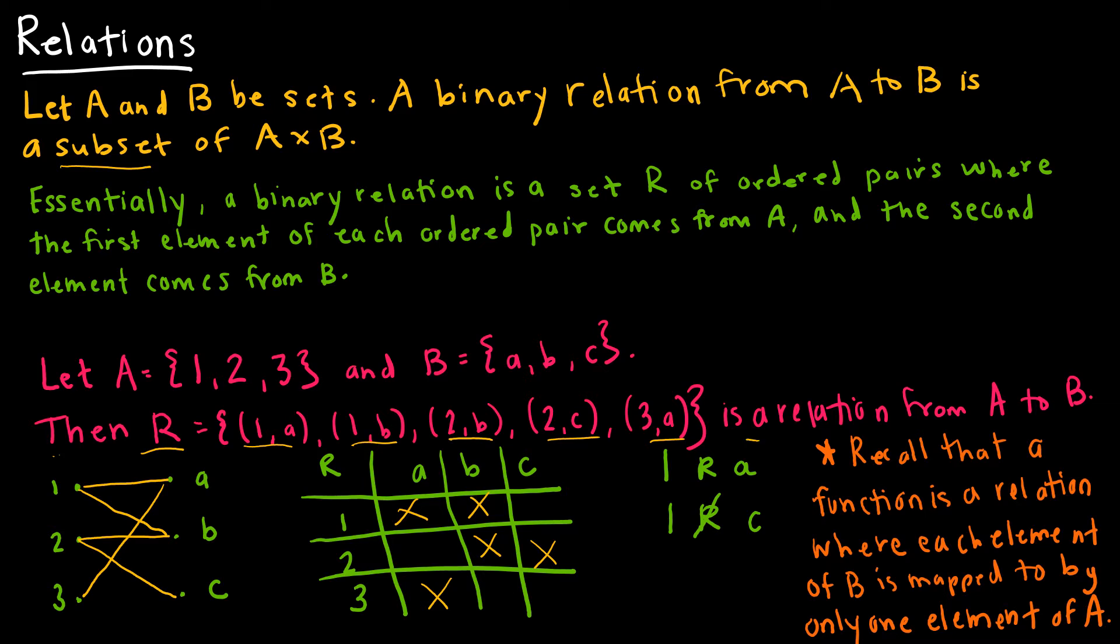And then we have 1Ra, so that's saying 1 is in the relation with a but 1 is not in the relation with c. So the relation does not map 1 to c. And then recall that if we're dealing with a function, a function is just a special type of relation where every element in B, the second set, is mapped to by only one element of A. So I did not give you an example of that. It's just a reminder that a relation is just a little bit more general because it doesn't have that extra restriction.